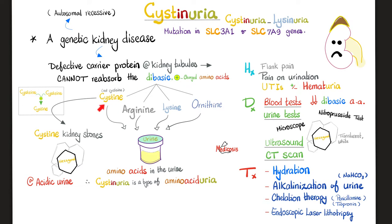The problem with these cystin molecules is that they can precipitate in the urine, causing cystin kidney stones. These stones are hexagonal in shape, translucent (not opaque), and white or whitish in color. They tend to precipitate in acidic urine, not in alkaline urine.